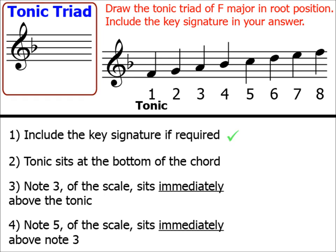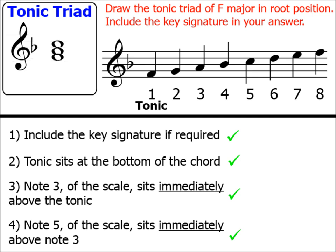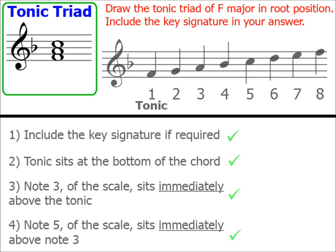Step 2: we take the tonic note F and pop it at the bottom of our tonic triad. By placing it at the bottom, we are also ensuring that the chord is in root position. Step 2 complete. Step 3: note 3 is A — we pop that onto our tonic triad. Step 3 complete. Step 4: note 5 is C, and we add that to our tonic triad. Let's just check that all three notes are balancing nicely on top of each other — they are. So here's our tonic triad for F major in root position with key signature.